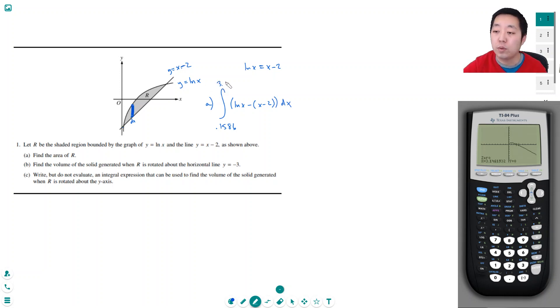So then I want to compute this integral. I have to remember the order of the things I put in. I think I put the function in first. I might have this wrong. I want to integrate ln x minus (x minus 2) over x from 0.1586 all the way to 3.1462.